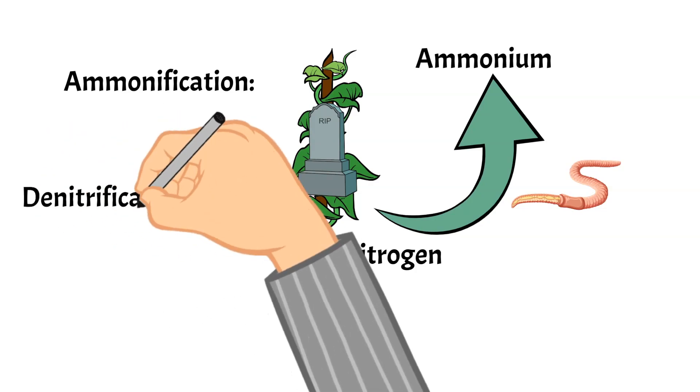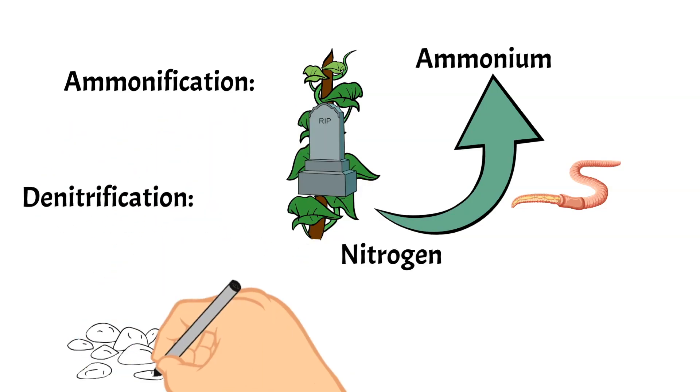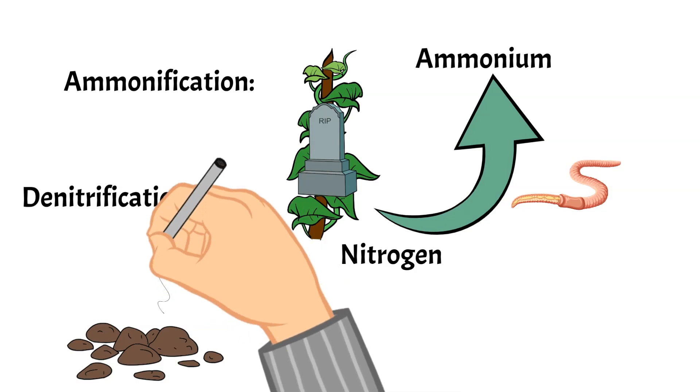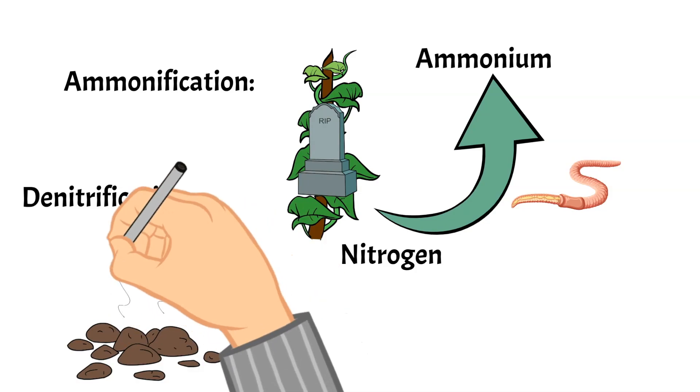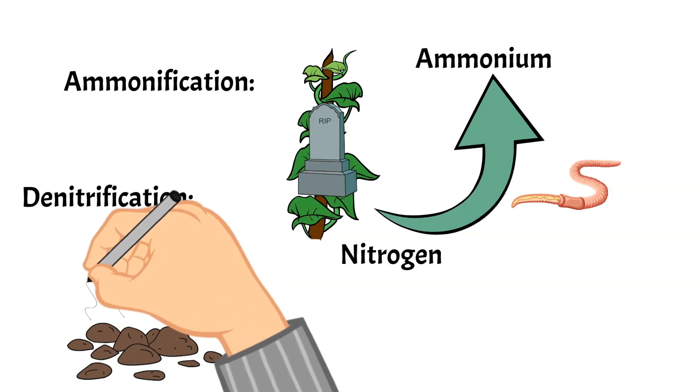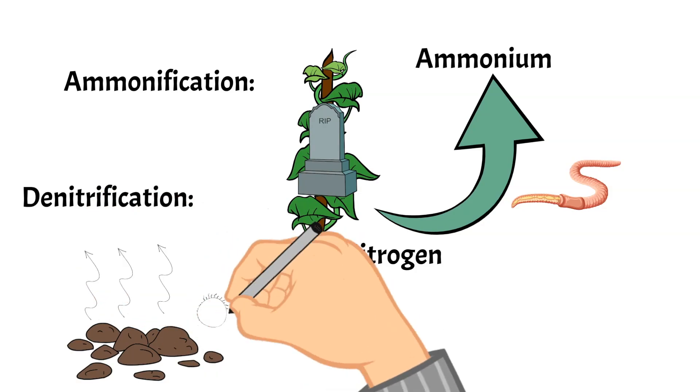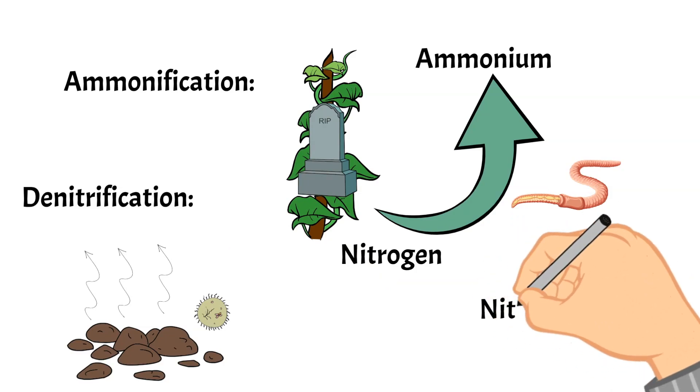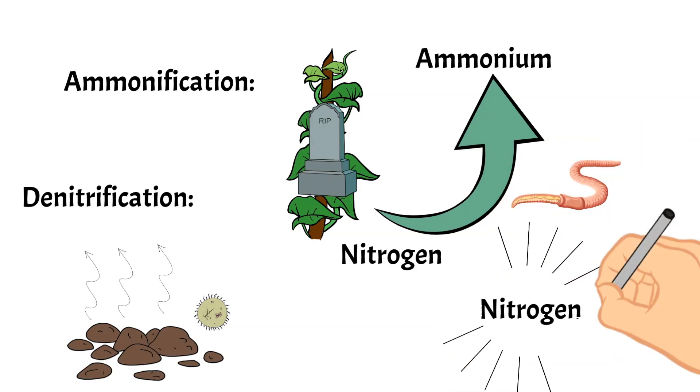And then there is also denitrification. This is when extra nitrogen in the soil actually gets put back into the atmosphere. And there are special bacteria that help to perform this task. So nitrogen is very important because plants and animals could not live without it. It's important for many of the processes in our cells and is even in our DNA.